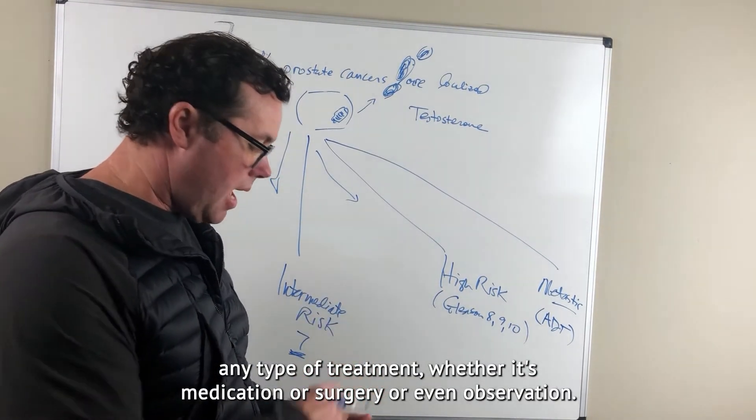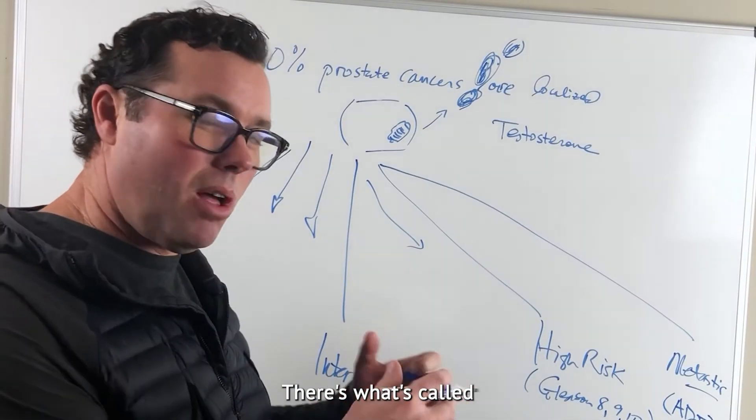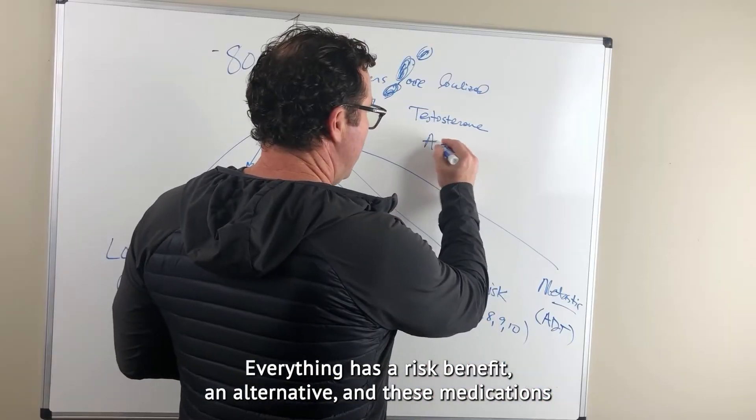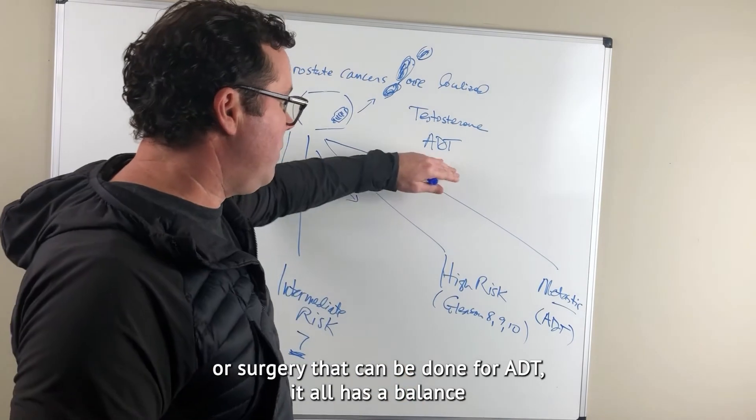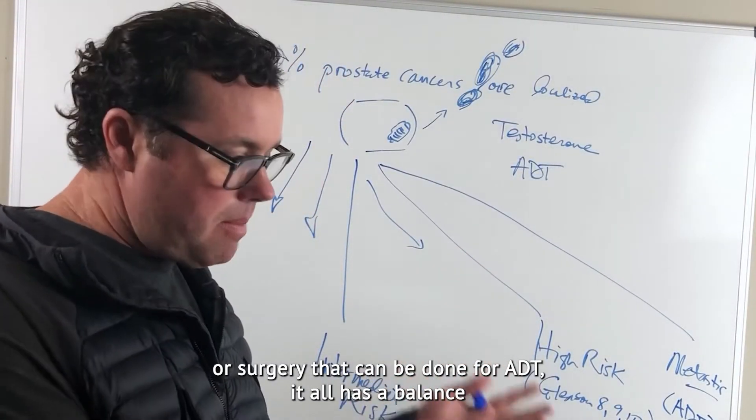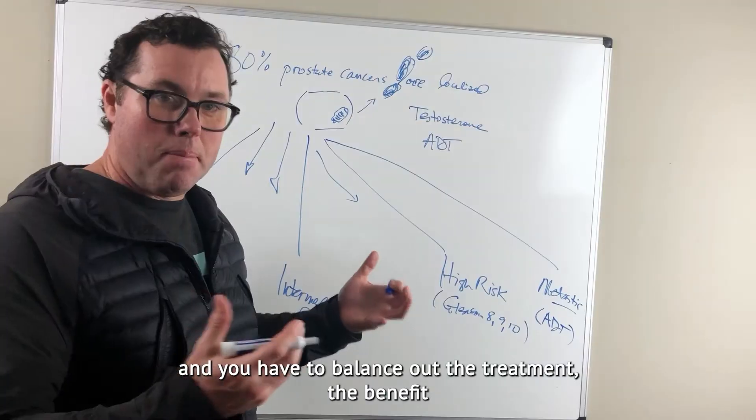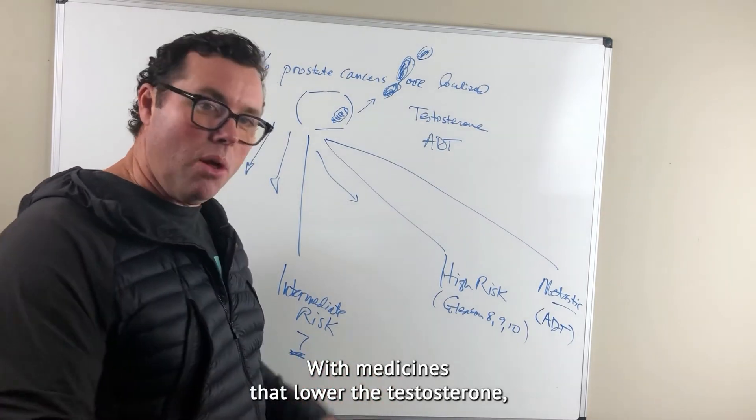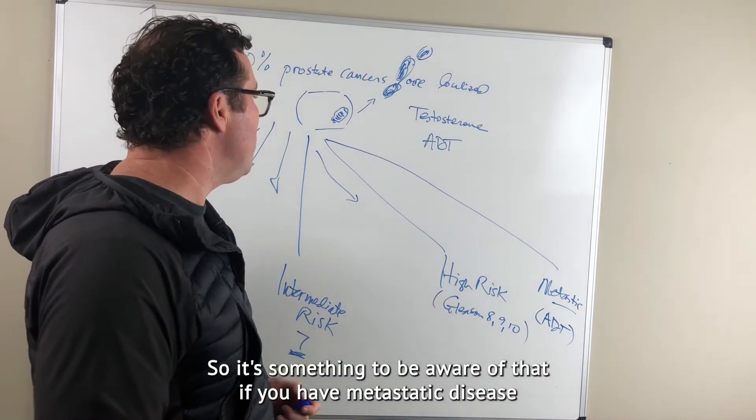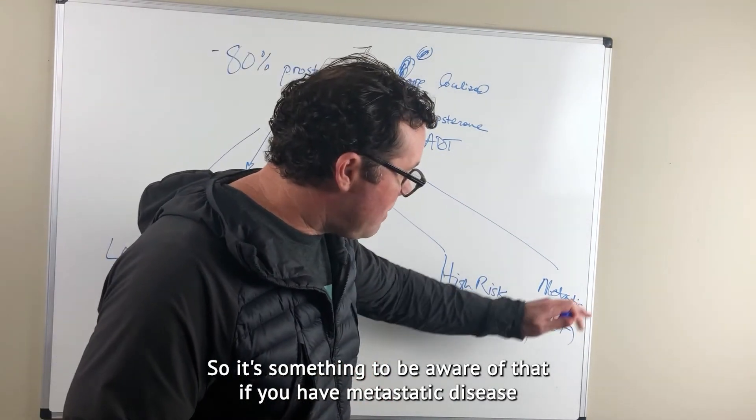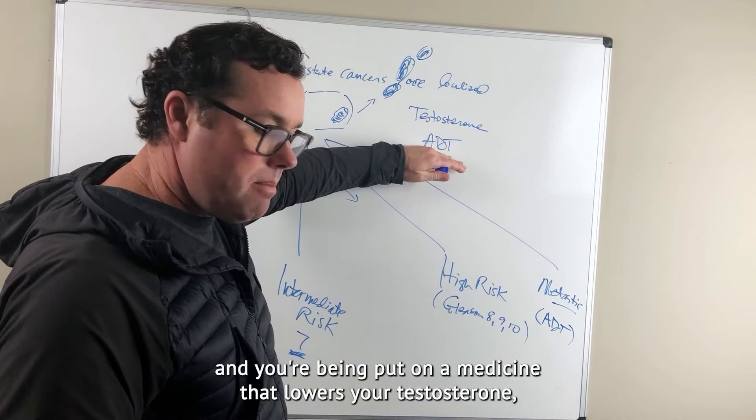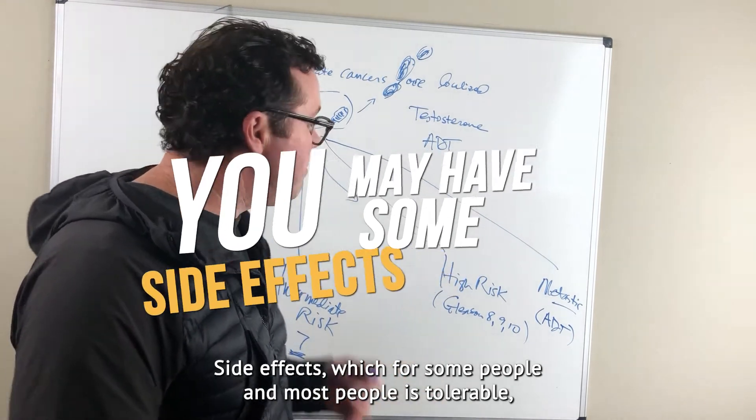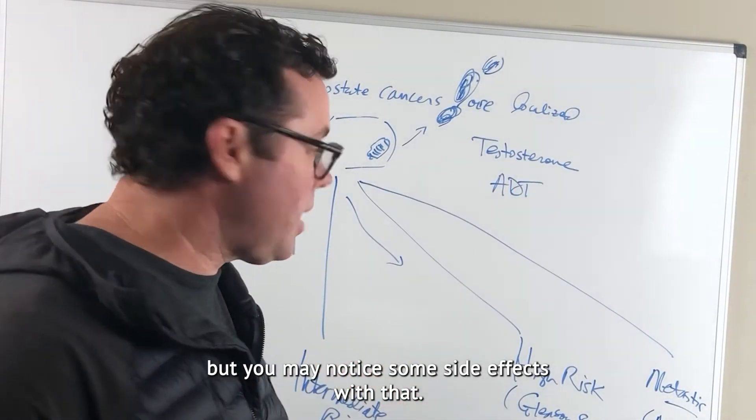Now, there are side effects to Androgen Deprivation. Any type of treatment, whether it's medication or surgery or even observation, there's what's called risks, benefits, and alternatives. Everything has a risk, benefit, and alternative. These medications or surgery that can be done for ADT all have a balance. You have to balance out the treatment, the benefit, and weigh out the risks. Some of these risks with medicines that lower the testosterone can be fairly significant. So it's something to be aware of, that if you have metastatic disease and you're being put on a medicine that lowers your testosterone, you may have some side effects, which for most people is tolerable.